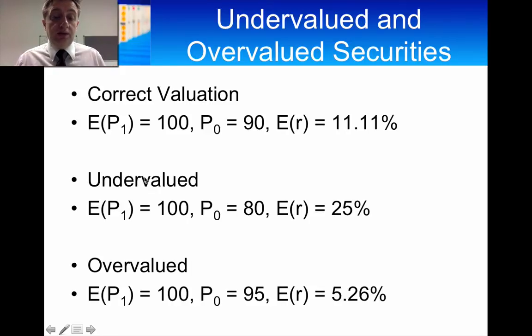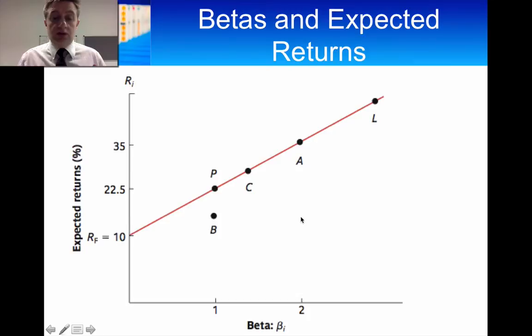And given the expected price one period from now is unchanged, that gives us an expected return of 25%. So it's an undervalued security and it has a higher expected return. So that would be somewhere up here on this. Now what happens then, that's undervalued.